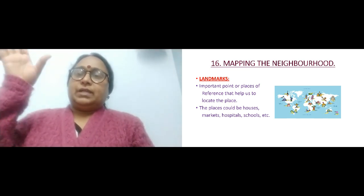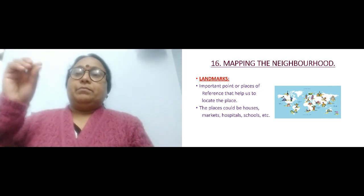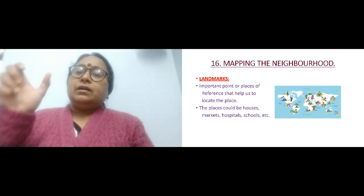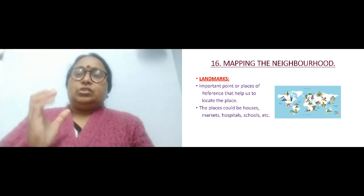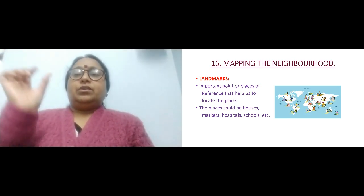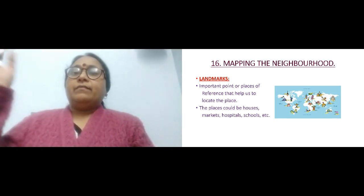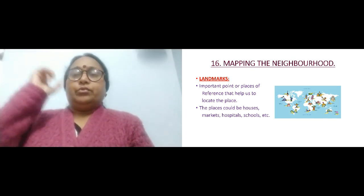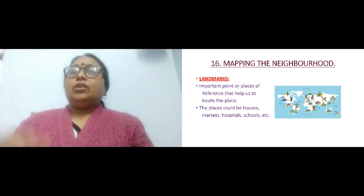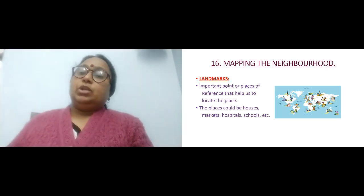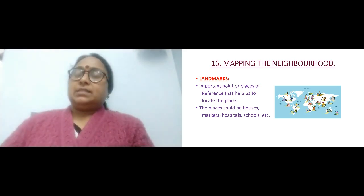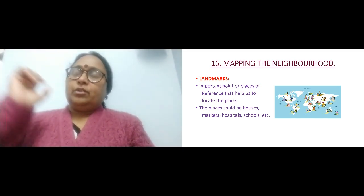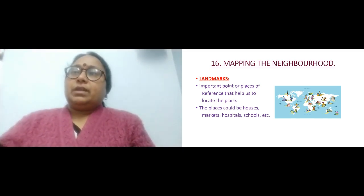By just seeing the picture of Taj Mahal, you know it is India — you don't need anyone to tell you, because Taj Mahal is found only in India. Similarly, the Great Wall of China is found only in China. By seeing the wall you know the place is China. Below that you see a kiwi bird, which represents New Zealand.